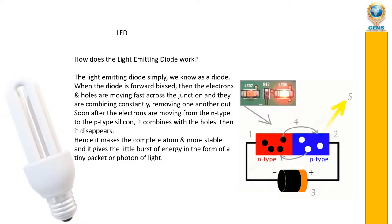When electrons move from the n-type to the p-type silicon, they combine with the holes and then disappear. This recombination of electron-hole pairs causes photons to be emitted. The atom becomes more stable and gives a tiny burst of energy in the form of a photon of light — this is how the LED produces light.